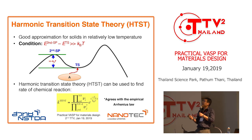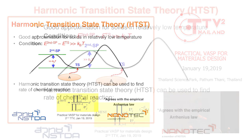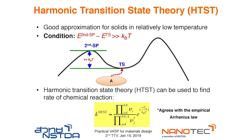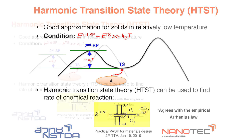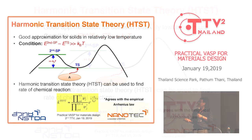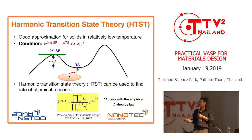Many times we use only the harmonic transition state theory, which is a good approximation for solids at relatively low temperature. Low temperature is defined such that the energy descent between the second saddle point and the transition state should be larger than k_B T. If you have this condition, using the harmonic transition state is okay, and you can use it to find the rate of chemical reaction.